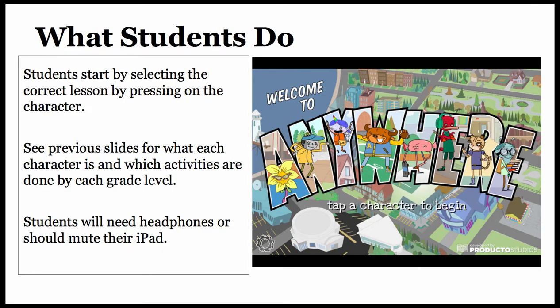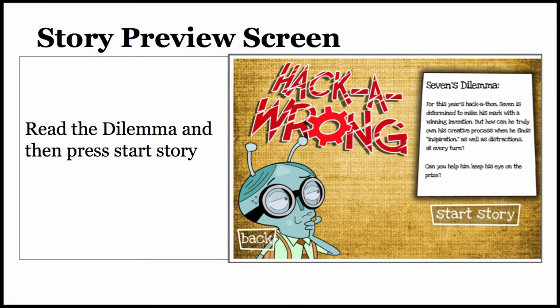What do students do? Students start by selecting the correct lesson by pressing on the character. See the previous slides for what each character is and which activities are done by grade level. Students will need headphones or should mute their iPad. This is what the story preview screen looks like — it will give you the dilemma, and then you will press start the story.